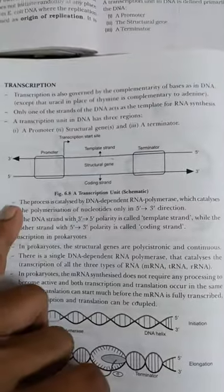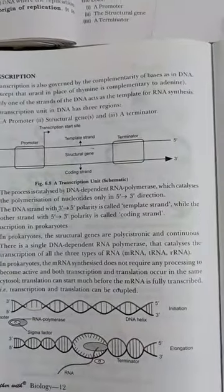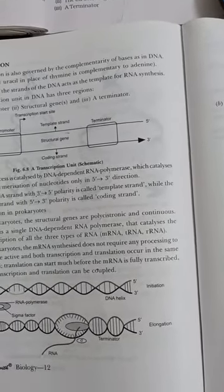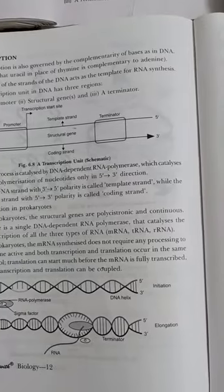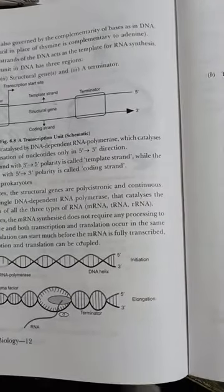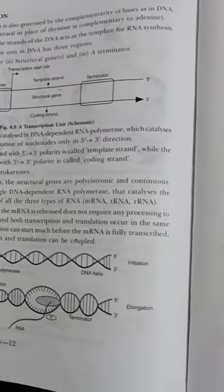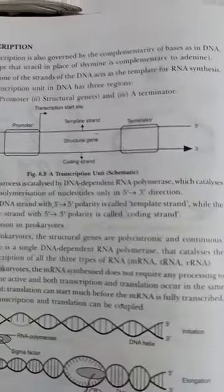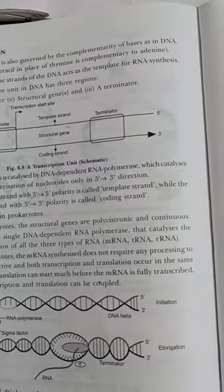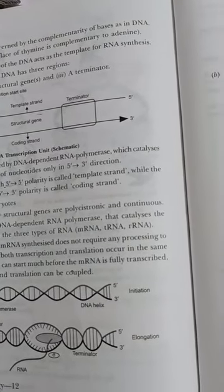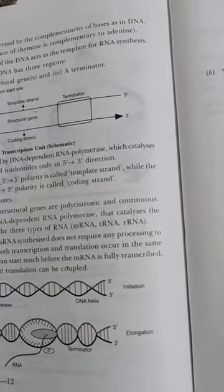The process is catalyzed by DNA dependent RNA polymerase which catalyzes the polymerization of nucleotides only in the five to three direction. There are two directions: three to five or five to three. The DNA strand with three to five polarity is called template strand, while the other strand with five to three polarity is called coding strand.